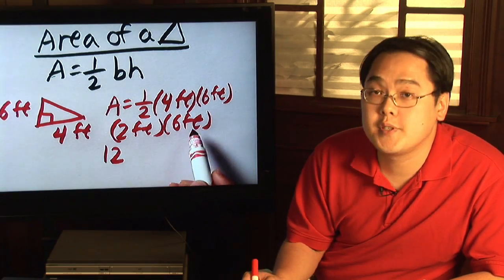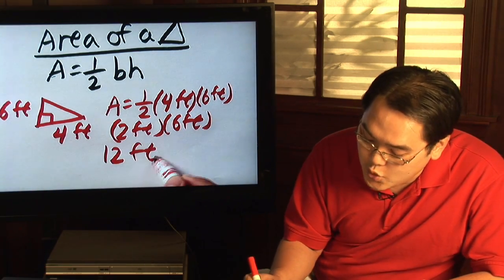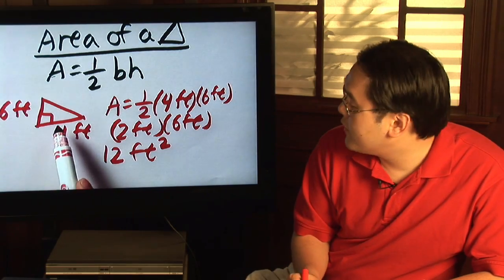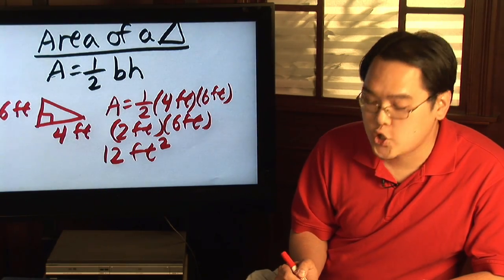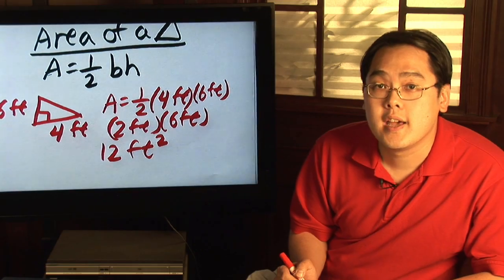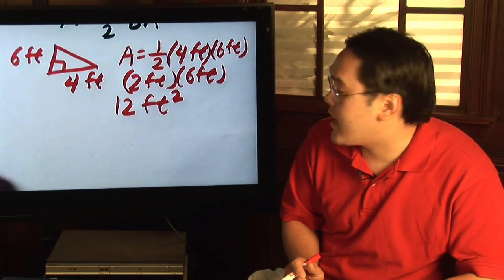but feet times feet is indeed feet squared or square feet. So the area of this particular triangle is twelve square feet. Now if you don't have a right triangle, then here's the strategy.